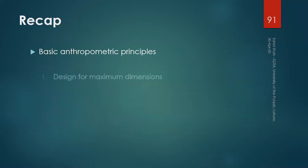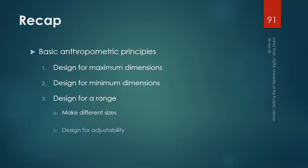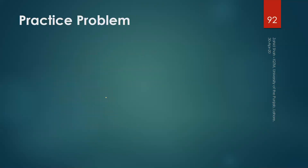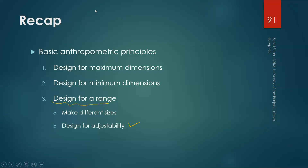In this part of the lecture we discussed three important anthropometric principles: design for maximum dimensions, design for minimum dimensions, and design for a range. We specifically discussed design for adjustability as the third principle. If you have any questions you can ask, and we will solve some practice questions during the practice session. Thank you.